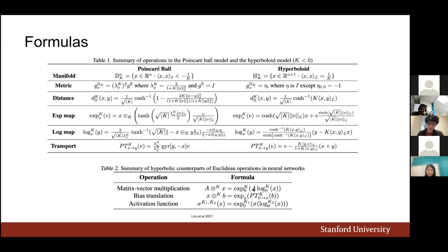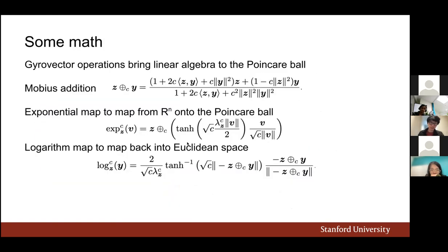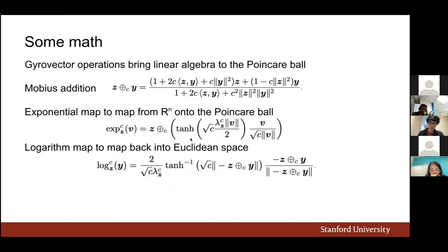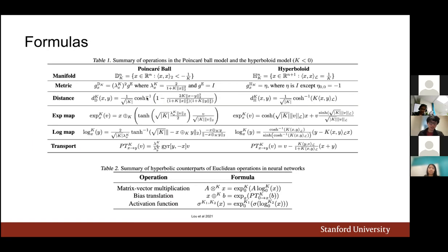As described, the building blocks — matrix-vector multiplication, adding a bias, and activation — are all defined using the exponential and logarithmic maps, and sometimes Möbius addition is used to define or simplify the formulas for these maps.